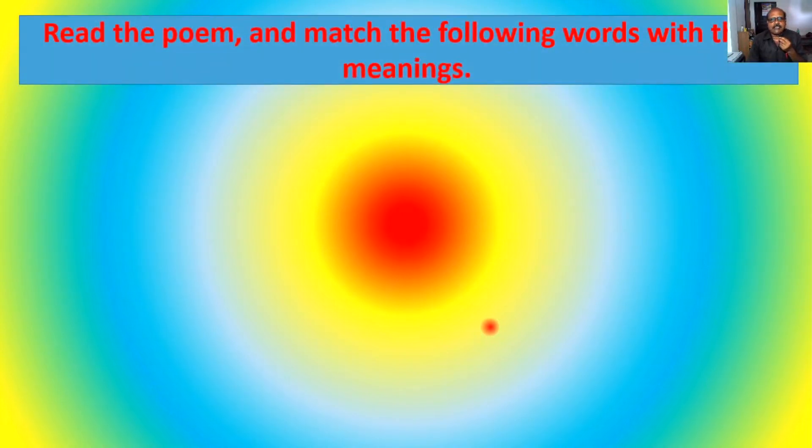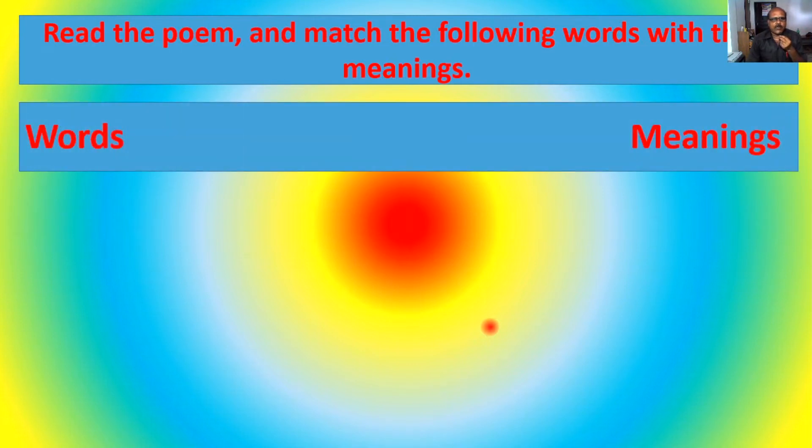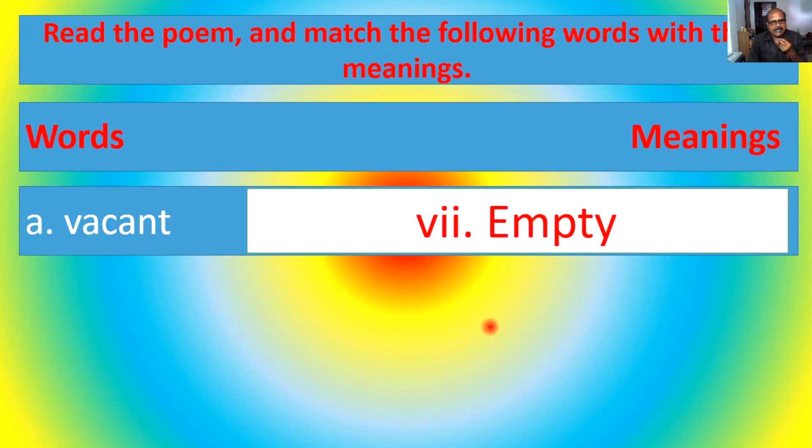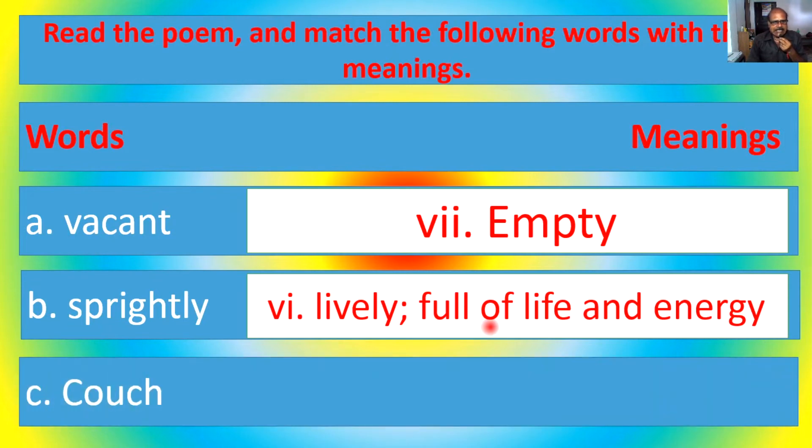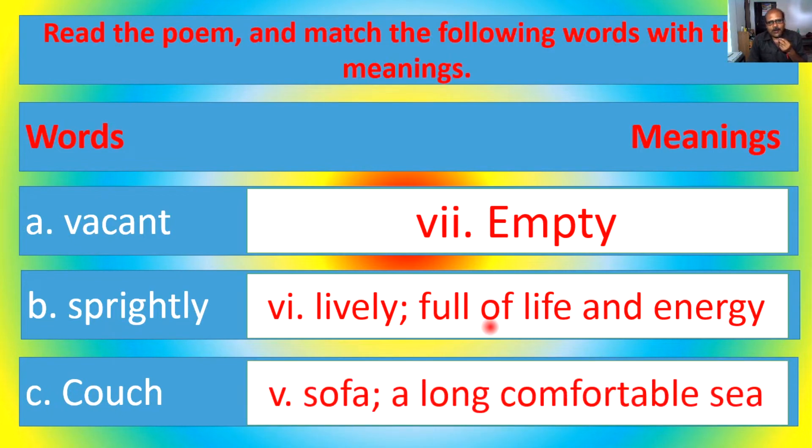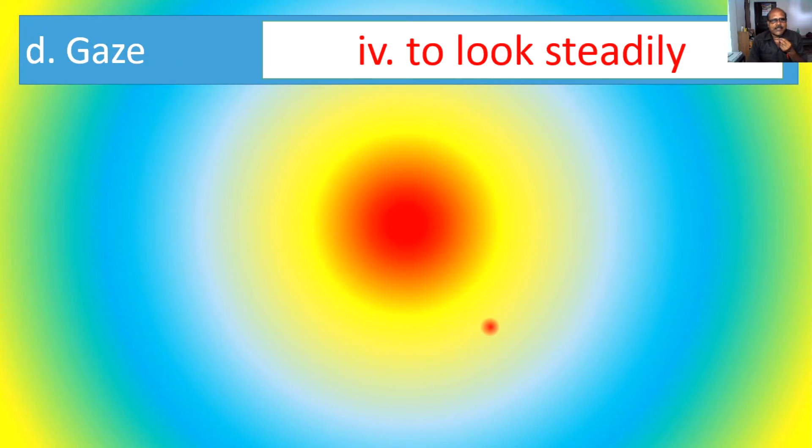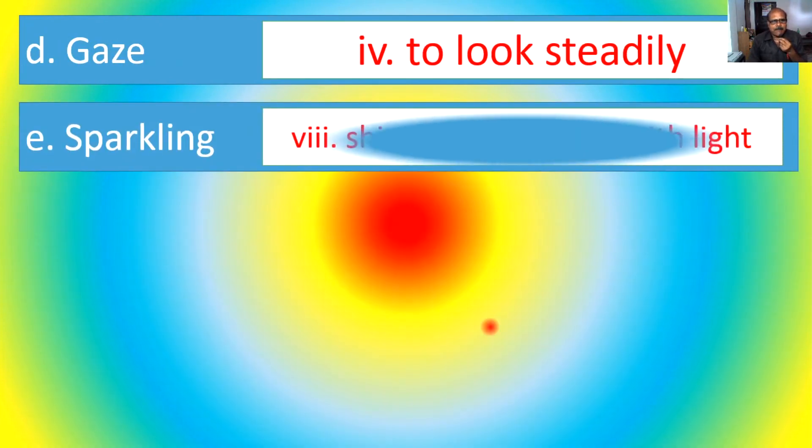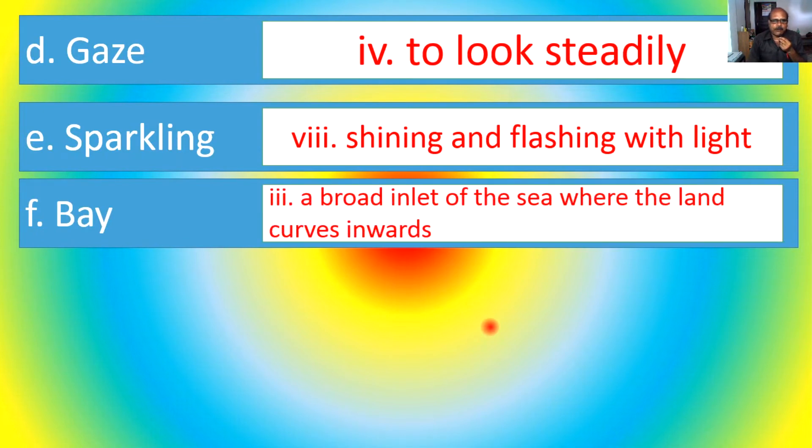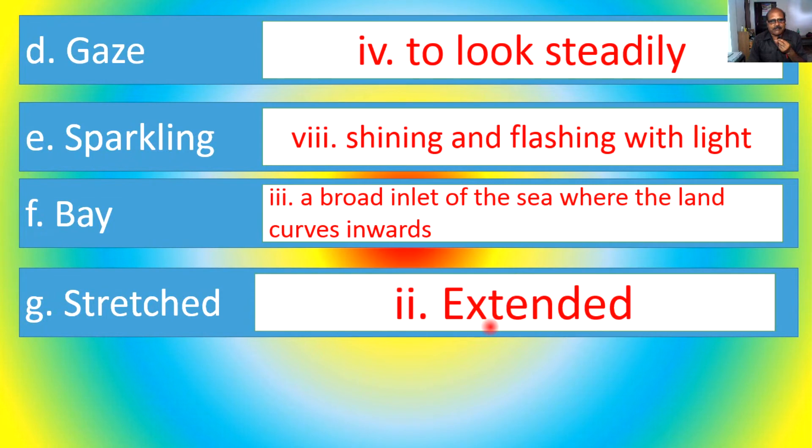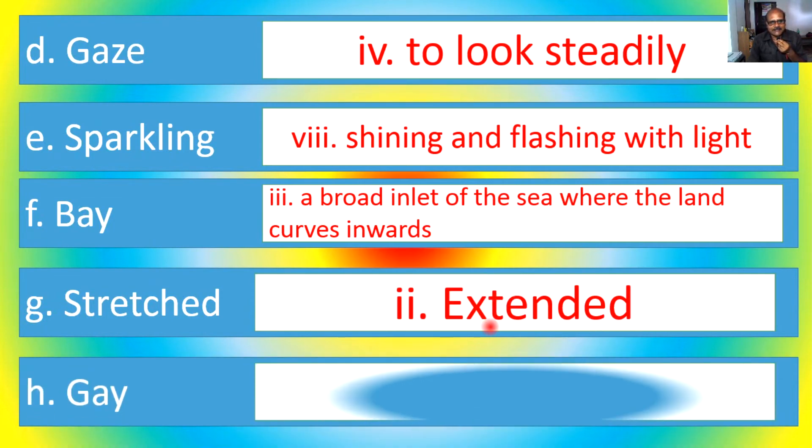Now, read the poem and match the following words with their meaning. Vacant - empty. Sprightly - lively, full of life and energy. Couch - sofa, a long comfortable seat. Gaze - to look steadily. Sparkle - shining and flashing with light. Bay - a broad inlet of the sea where the land curves inward. Stretched - extended. Gay - cheerful.